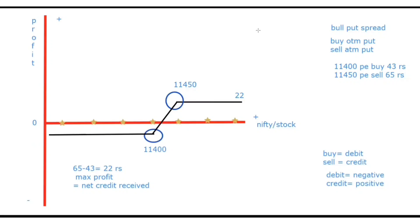Now how will we get the maximum loss? Maximum loss in this strategy will equal to the strike difference minus the net credit. Maximum loss would be 11,450 minus 11,400 minus net credit which is 22 rupees which equals to 28 rupees. That is our max loss.